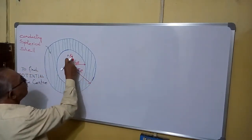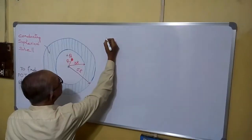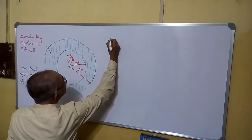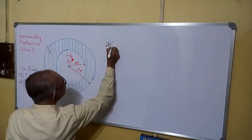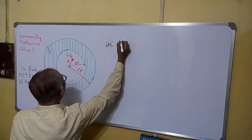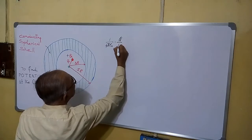See here, for this charge, potential will be 1 by 4 pi epsilon 0 into Q by R.